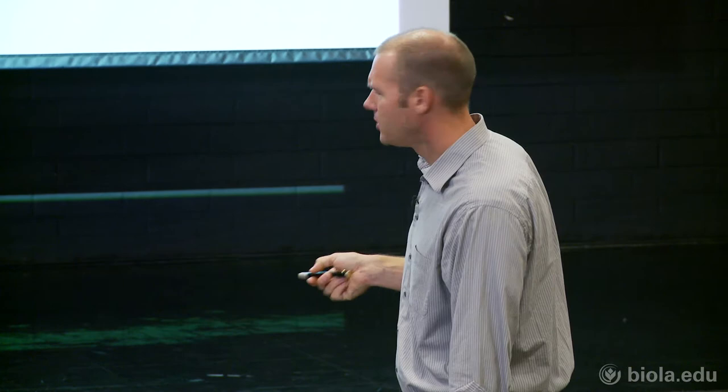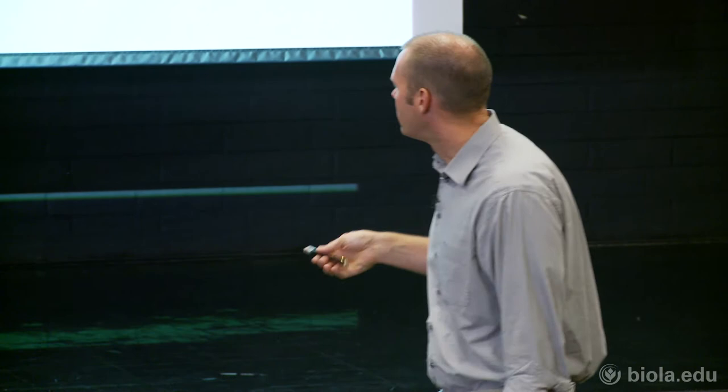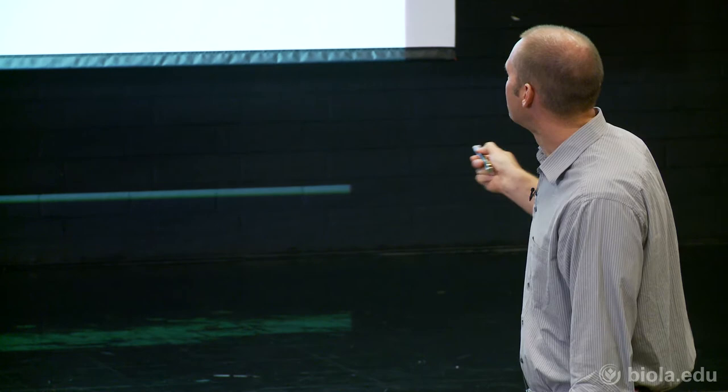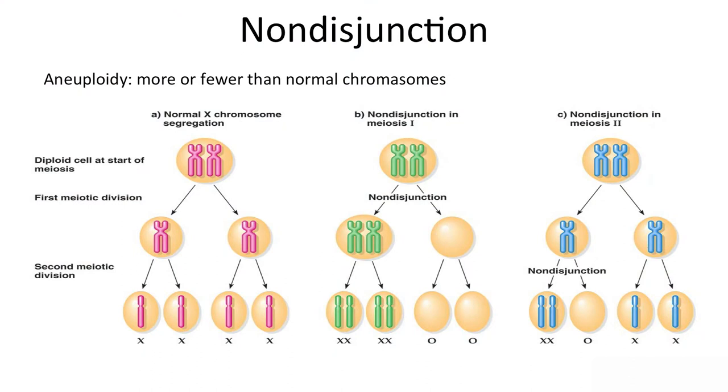Non-disjunction can also happen in meiosis II — the first round is normal, but in the second round chromosomes go to the wrong side. This produces gametes with two copies of a chromosome and gametes lacking that chromosome. If these abnormal gametes get fertilized, you can end up with XXX or XXY individuals depending on which sperm fertilizes the egg. These errors lead to chromosomal syndromes.